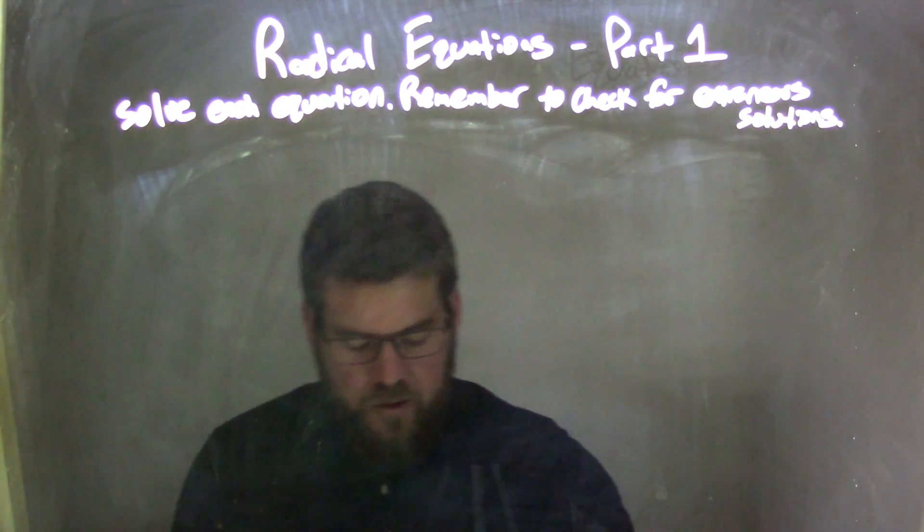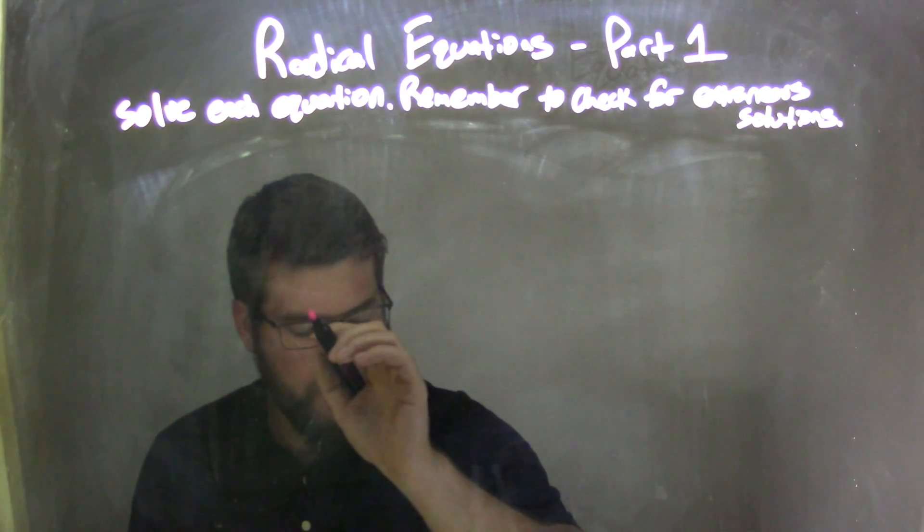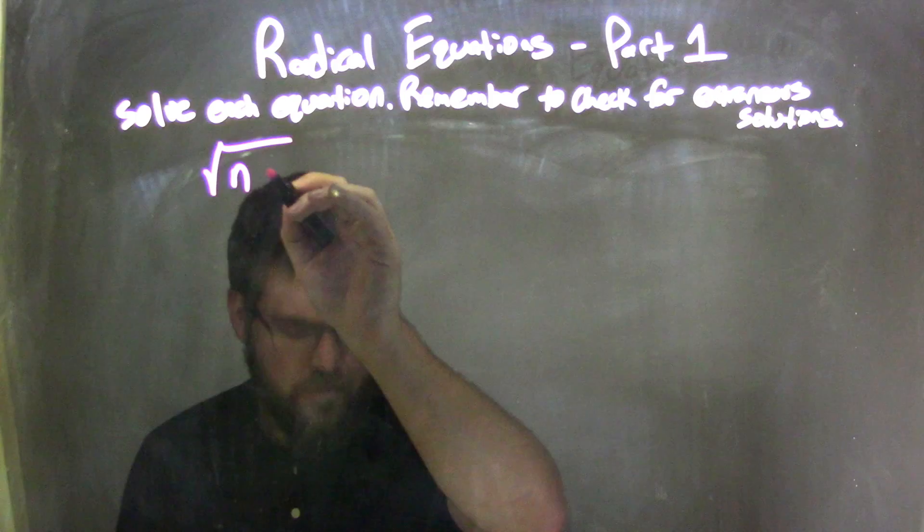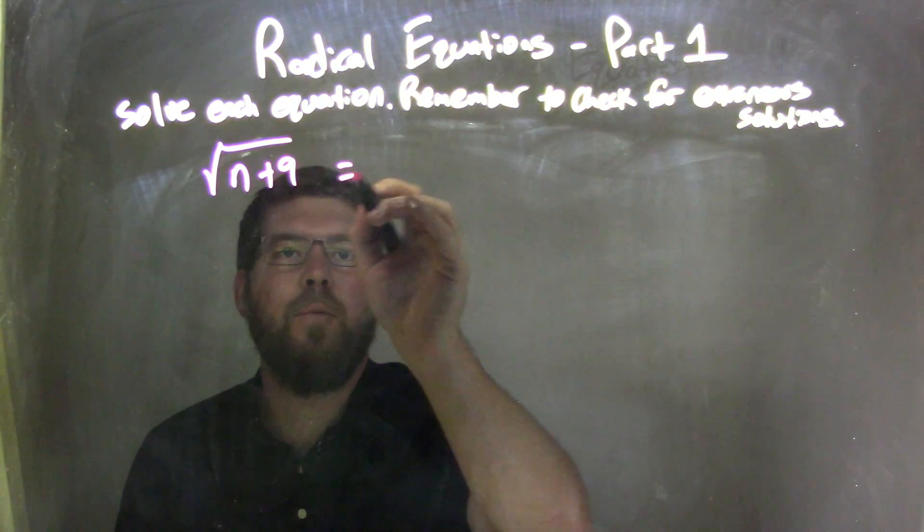So if I was given this equation, the square root of n plus 9 equals 1.